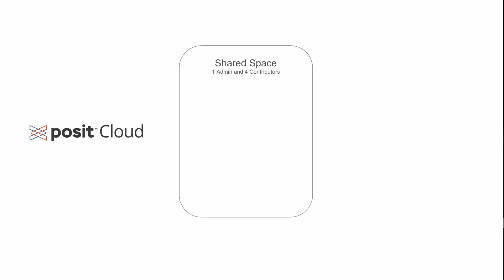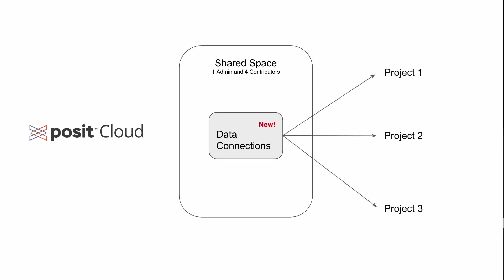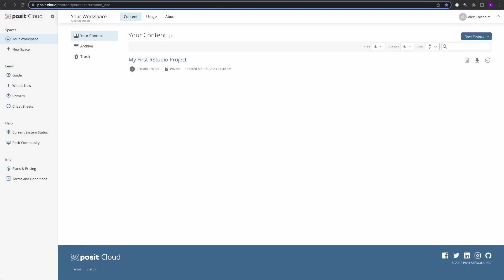Posit Cloud is an online platform where you can easily do and share data work with just a few clicks. We recently added a new feature called Data Connections, which lets you securely store database credentials and share them across data projects and among your collaborators. In this tutorial, we will demonstrate how to achieve this by using a publicly available Postgres database. Let's get started.